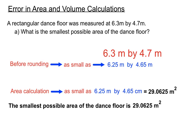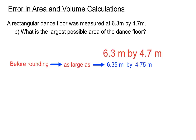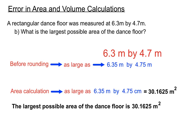The smallest possible area of the dance floor is 29.0625 m². For the largest possible area, the dimensions before rounding down could have been almost as big as 6.35 — anything below 6.35 would round down to 6.3 — and the second dimension could have been almost as big as 4.75 before rounding down to 4.7. Calculating with those larger values gives the largest possible area of the dance floor as 30.1625 m².